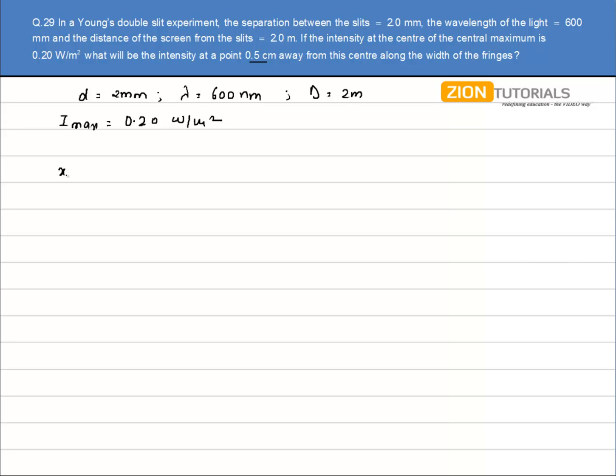We know that path difference is given by Y into small d by capital D. So Y is given as 0.5 cm, the value of small d is 2 mm, and the value of capital D is 2. So the path difference comes out to be 5 into 10 to the power minus 6 meters.